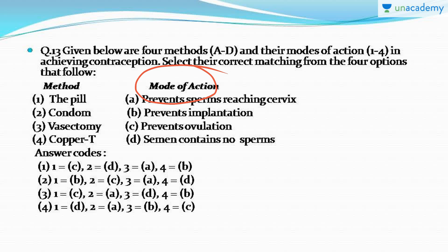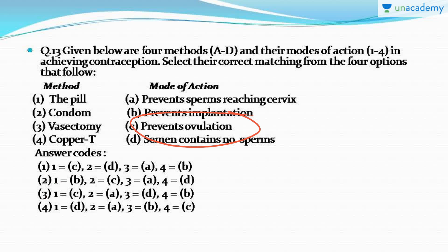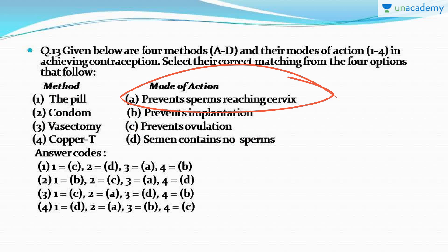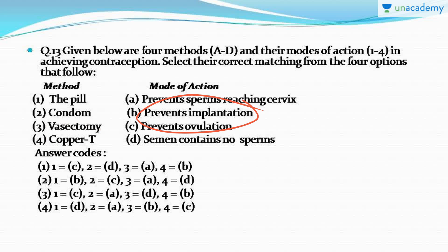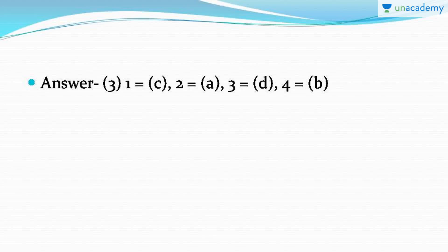The correct answer for this question is option number three. The pill prevents ovulation from the ovary — it does not allow the ova to come out. The condom prevents sperms from reaching the cervix by acting as a barrier. Vasectomy is a surgical procedure in males due to which the semen released contains no sperms or very few sperms. Copper-T is an intrauterine device placed in the uterus of the female; it prevents implantation of the zygote.